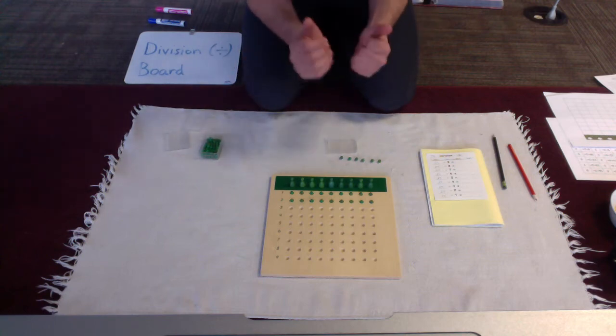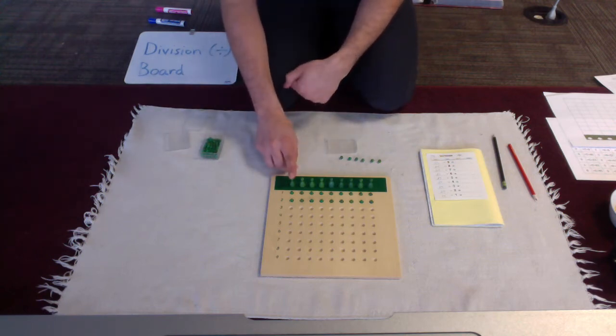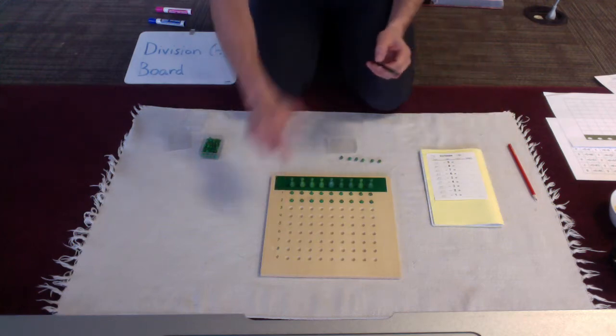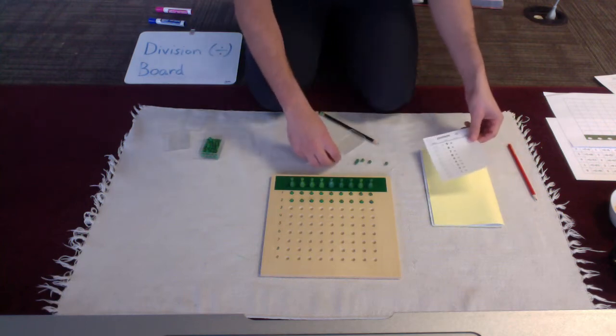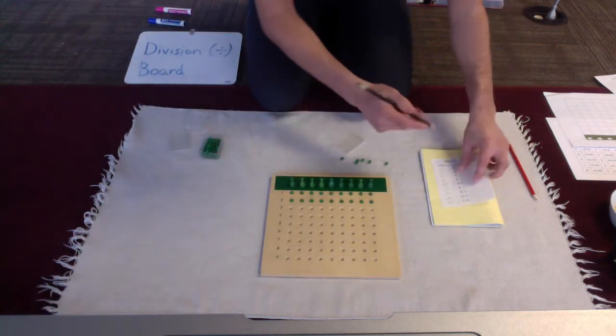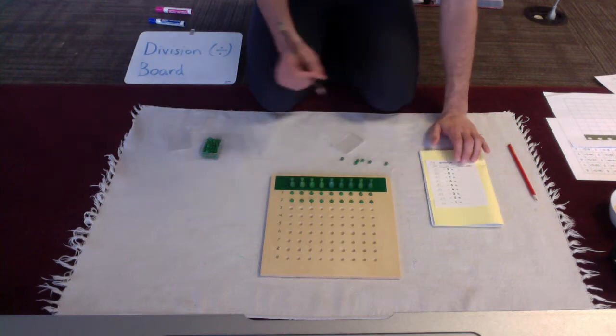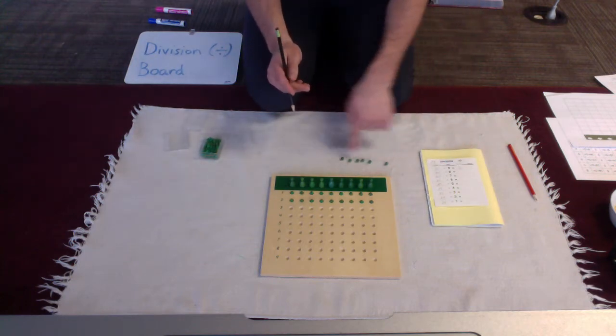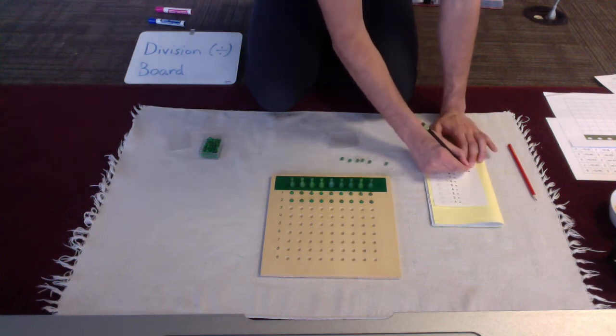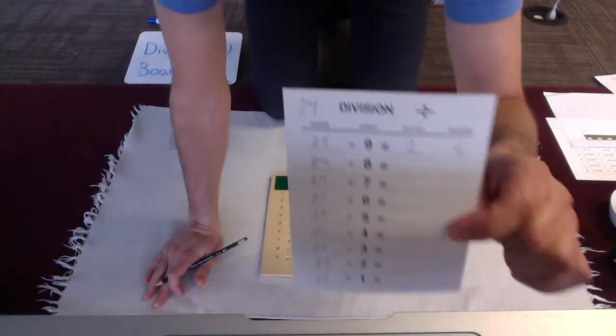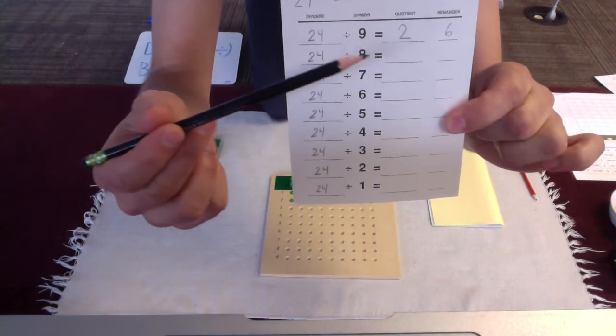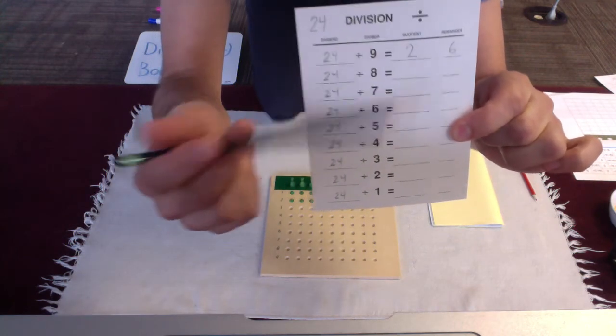All right now the answer, or the quotient, in division is what one unit receives. And in this case, one unit receives two. So, I will record two in my quotient. 24 divided by 9 is 2. And did I have any units remaining that I couldn't divide? Yes, I have 1, 2, 3, 4, 5, 6 remaining. So, my first equation will look like this, 24 divided by 9 equals 2, with the remainder of 6.